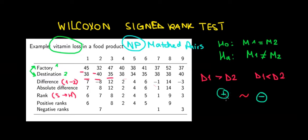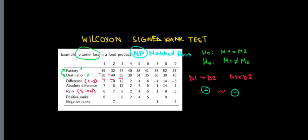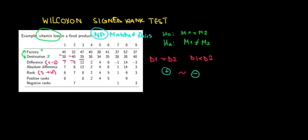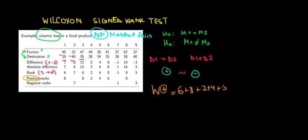But how are we testing? We are not simply comparing the sum of positive ranks with the sum of negative ranks. Instead, we compare the sum of positive ranks with the expected value of the sum of positive ranks. So what is the sum of positive ranks? We go to the positive ranks and add them up: 6 plus 8 plus 2 plus 4 plus 5 plus 9. These are the positive ranks — they occur when values of the first distribution are higher than the second. So 6 plus 8 is 14, plus 2 is 16, plus 4 is 20... the sum of positive ranks is 34.